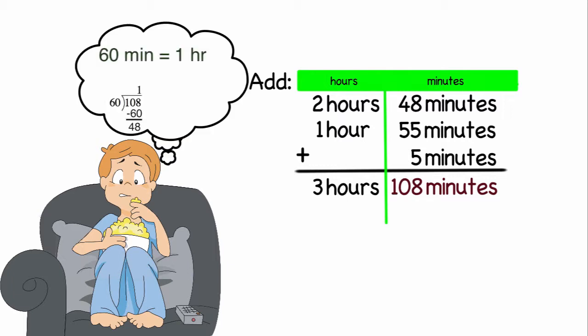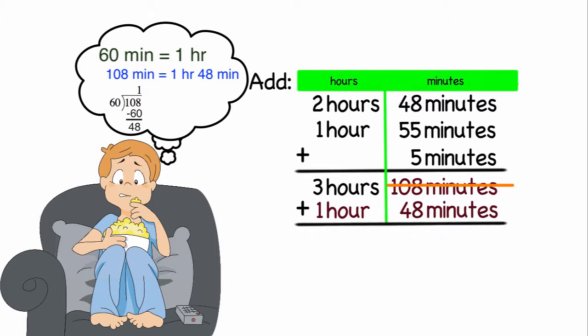So if I was to divide that by 60, I would find that it was one hour and 48 minutes. So I'm going to add that back into my three hours. And that would give me a total of four hours and 48 minutes.